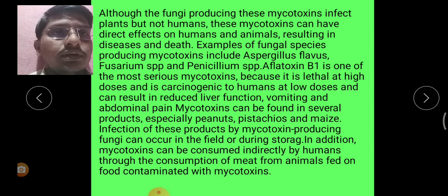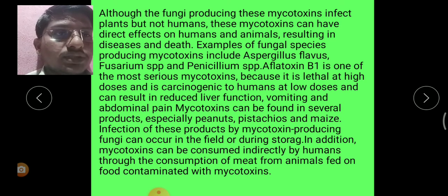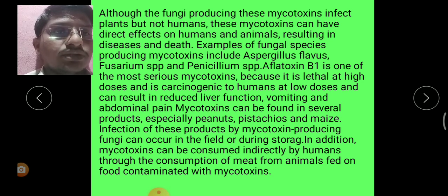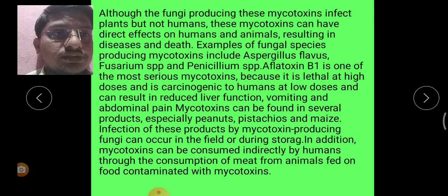Examples of fungal species producing mycotoxins include Aspergillus flavus, Fusarium species, and Penicillium species. Aflatoxin is one of the most serious mycotoxins because it is lethal at high doses, is carcinogenic to humans at low doses, and can result in reduced liver function, vomiting, and abdominal pain.